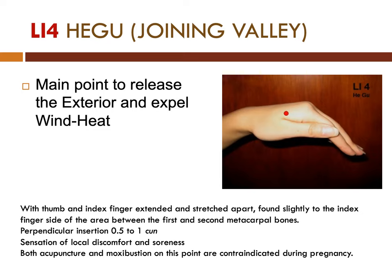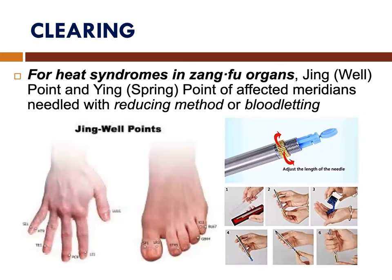Both acupuncture and moxibustion on LI-4 are contraindicated during pregnancy. For heat syndromes in zangfu organs, jingwell points and ying-spring points of affected meridians are needled with reducing methods or bloodletting. The jingwell points in the hand are Lung-11, LI-1, Pericardium-9, Triple Warmer-1, Heart-9, and SI-1.